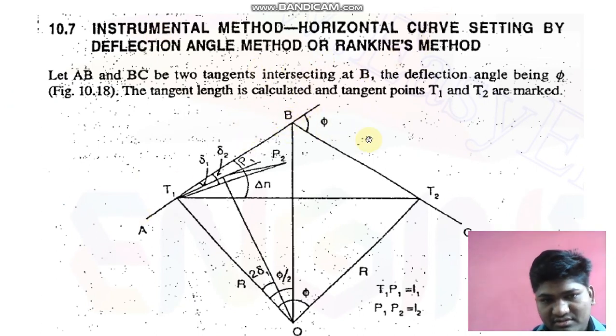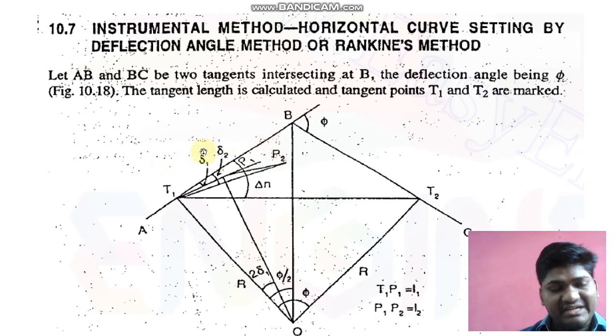So we'll go to our PDF. Instrumental method, Rankine's method: AB is the initial tangent, BC is the forward tangent, this is O the origin, this is radius, this is delta1. We have to find out the formula and derive the formula for delta1. In the whole method, two things are more important: first is delta, second is L.